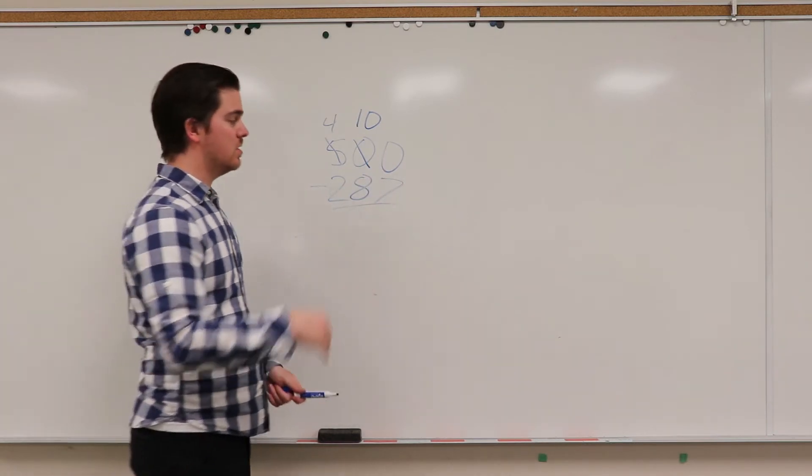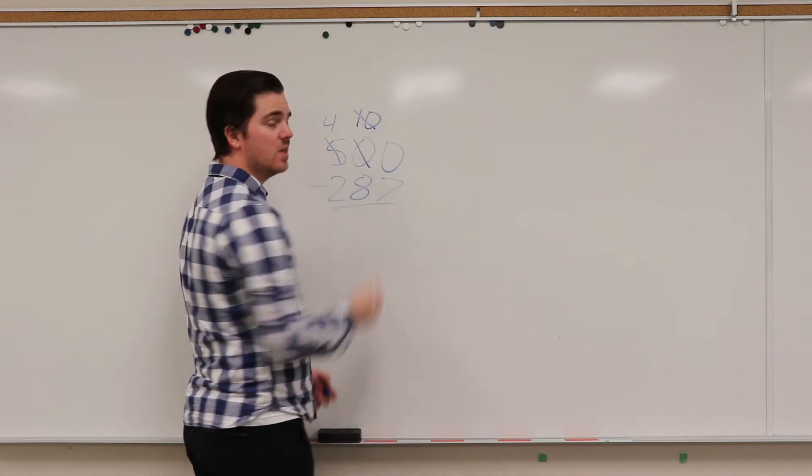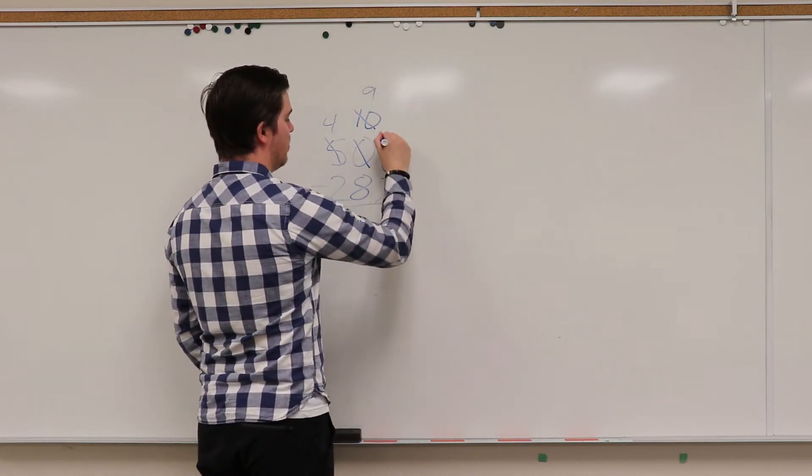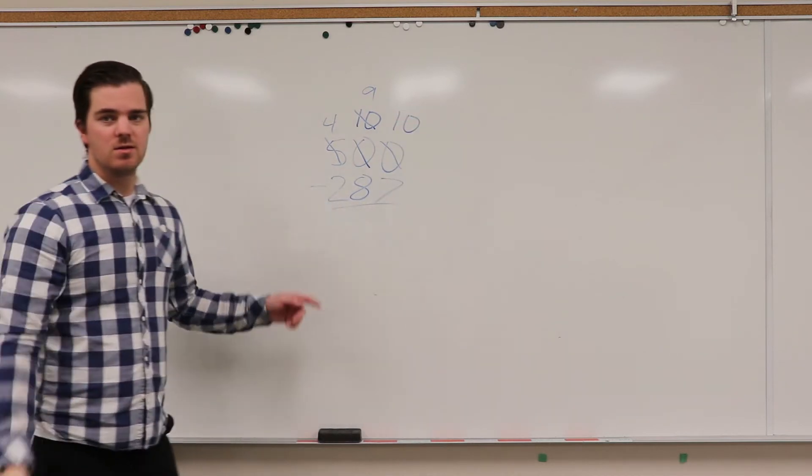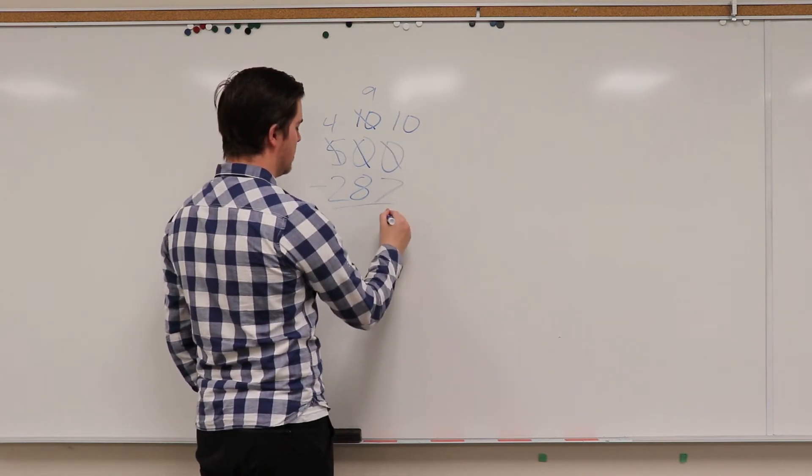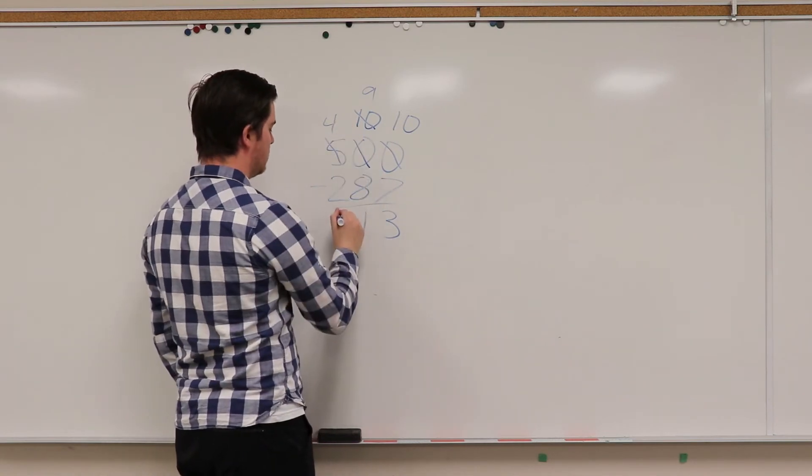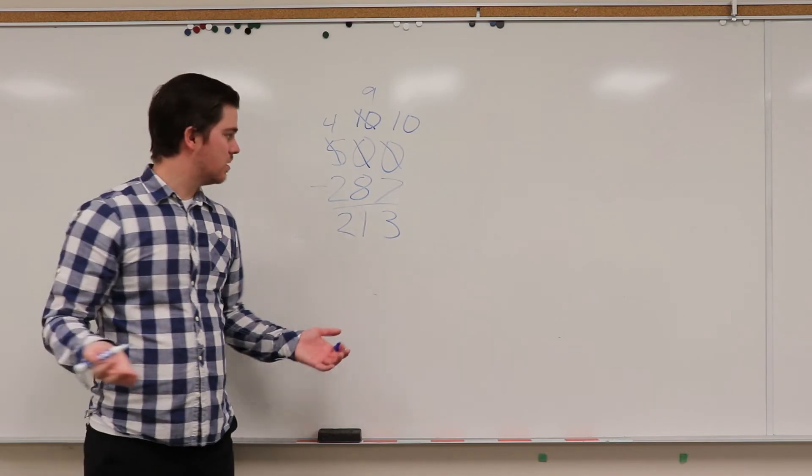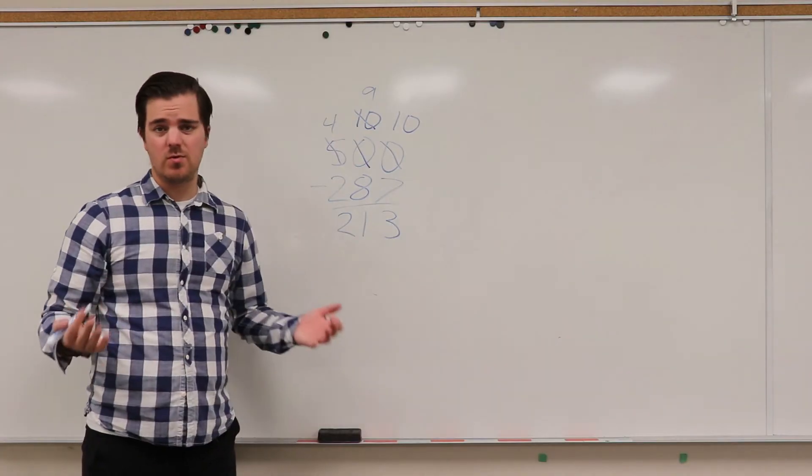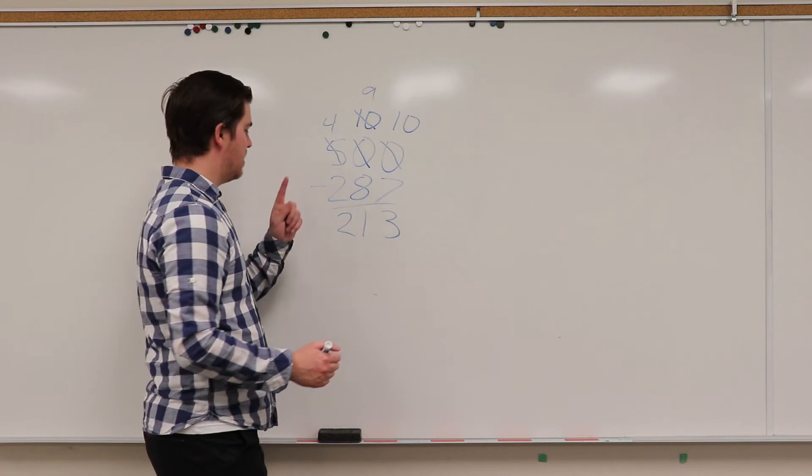All right, can I do it now? Zero take away seven? No, I can't. So what I need to do is I need to borrow from this taco stand. So we go up to here, cross that ten off, it becomes a nine. Then we add that one to a ten. So your question should look something like this. Let's try it. Ten take away seven is three. Nine take away eight is one. Four take away two is two. 213. Thanks teacher, I got this. You got that? I think we're right.